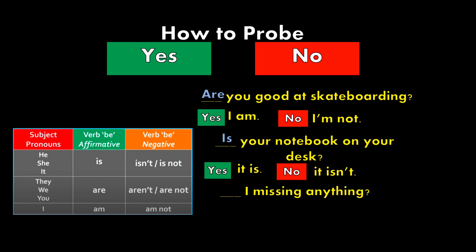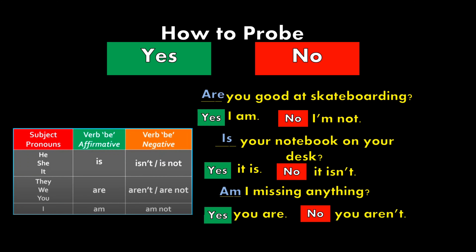Last question: 'I missing anything.' The subject pronoun is 'I'. What's the verb be affirmative for subject pronoun 'I'? The answer is 'am'. So: Am I missing anything? The same situation applies as in the first question. The only difference is if you are the one asking the question now. So how should you respond? The answer is 'Yes, you are' or 'No, you aren't'.